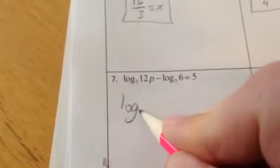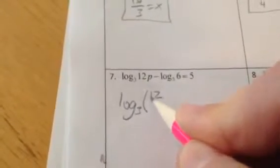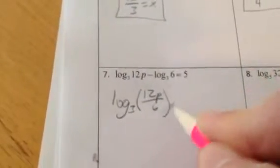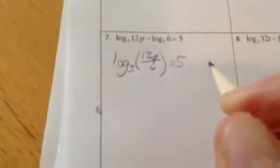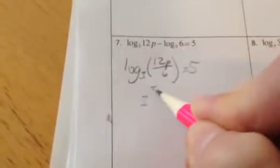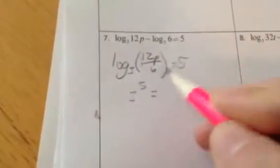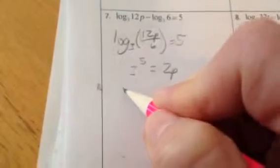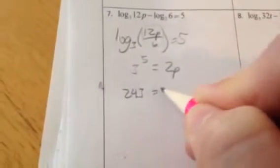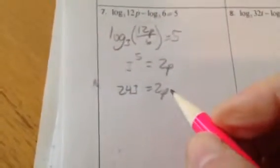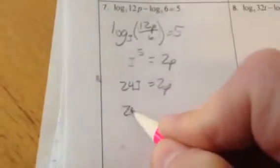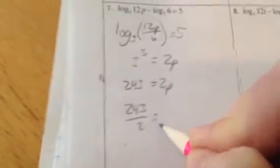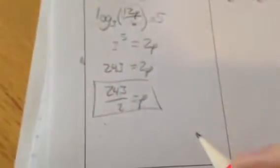And again. Oh no, now we're subtracting. But that just means that in a single log we're dividing. So 12p divided by 6 equals 5. So 3 to the 5th equals 12p over 6, which I know is just 2p. 3 to the 5th is 243, and that's 2p. And so then divide by 2. So whatever 243 divided by 2 is, is p. Check.